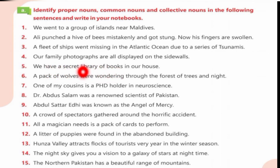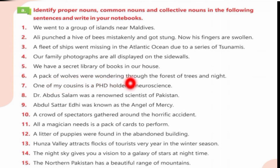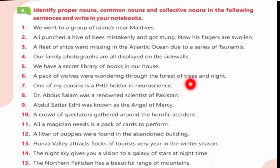We have a secret library of books in our house. 'Secret library' is a proper noun. 'Books' and 'house' are common nouns. Our pack of wolves were wandering through the forest of trees at night. 'Pack of wolves' is a collective noun. 'Forest of trees' is also a collective noun.